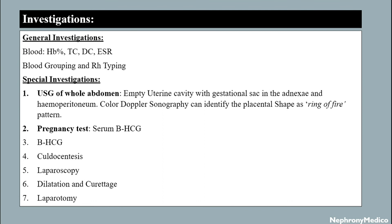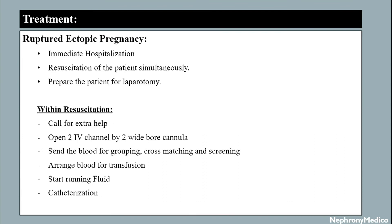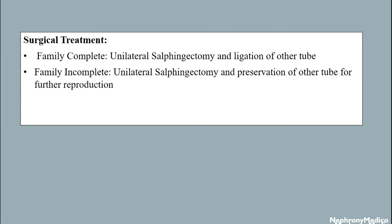Treatment in case of ruptured active ectopic pregnancy: immediate hospitalization and resuscitation of the patient simultaneously while preparing for laparotomy. Initial steps include calling for extra help, opening two IV channels with wide-bore cannulas, sending blood for grouping, cross-matching and screening, arranging blood for transfusion, starting running fluid, and catheterization. If hemoperitoneum is complete: unilateral salpingectomy and ligation of the other tube. If hemoperitoneum is incomplete: unilateral salpingectomy and preservation of the other tube for further reproduction.